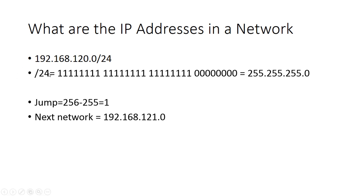So the next network address will be 192.168.120 plus the jump of 1, which is 192.168.121.0. This is the next network after the given network, which is not part of the given network. I find this next network because I want to find the range of IP addresses. This next network address is the very first IP address of the next network.